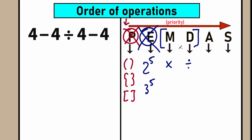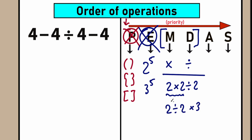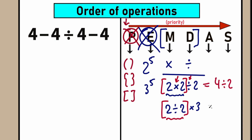Since multiplication and division have the same priority, if we have 2 times 2 divided by 2, we perform multiplication first because it comes first from left to right. But if we have 2 divided by 2 times 3, then division comes first from left to right, so we do 2 divided by 2 equals 1, then 1 times 3. We need to scan what is the first sign from left to right and perform that operation first.